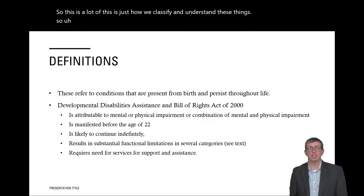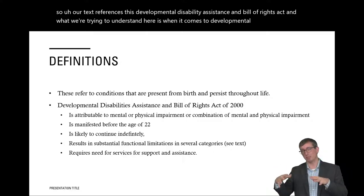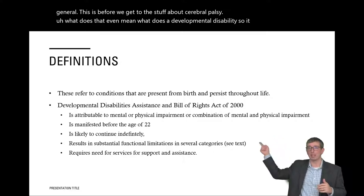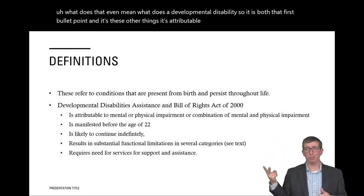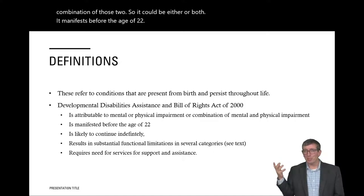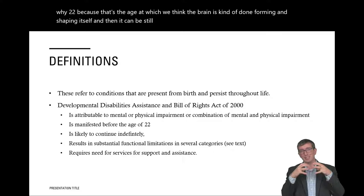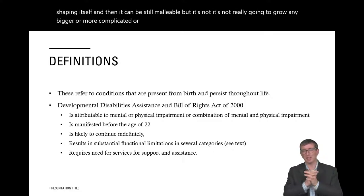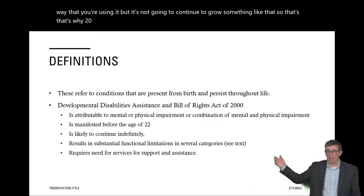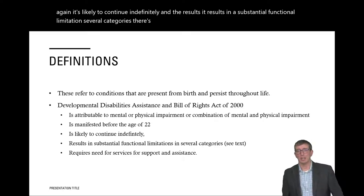Our text references the Developmental Disability Assistance and Bill of Rights Act. A developmental disability is attributable to a mental or physical impairment — or a combination — and it manifests before age 22. Why 22? Because that's the age at which we think the brain is essentially done forming. After that, you can mature in how you use it, but it's not going to continue to grow. And it's likely to continue indefinitely, resulting in substantial functional limitations across several categories.